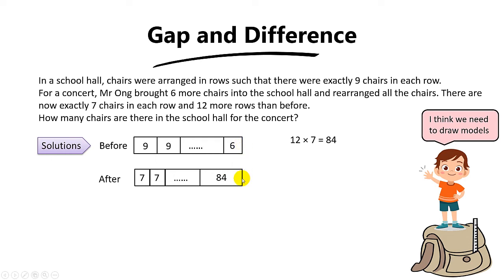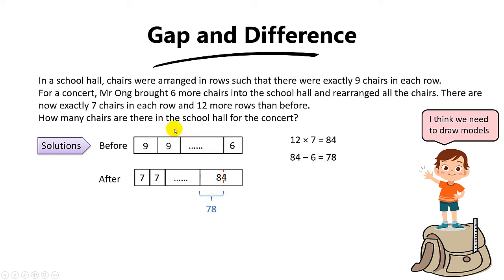Make sure that these two models are in line with each other, because the total number of chairs did not change. To find the difference, you take 84 minus 6, which gives you 78. That will be the difference between the two models.